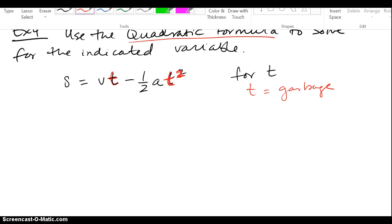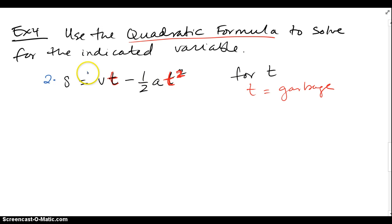Now to begin with, I really don't like that fraction 1 half, so I'm going to multiply all the chunks by 2 to get rid of that 1 half before I do anything else. That's going to be 2s.